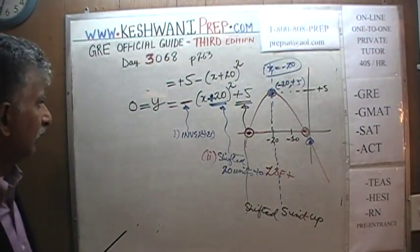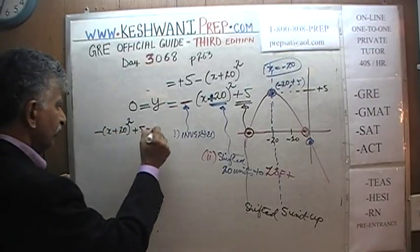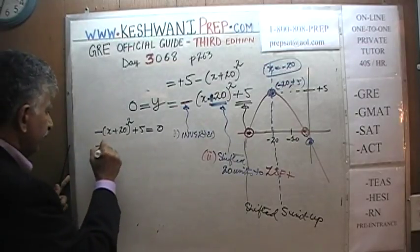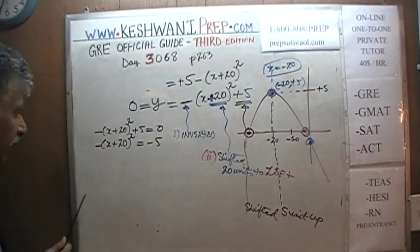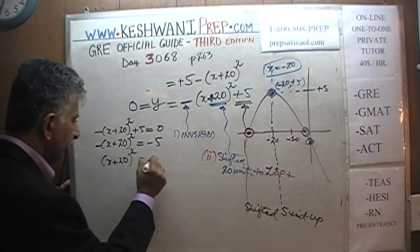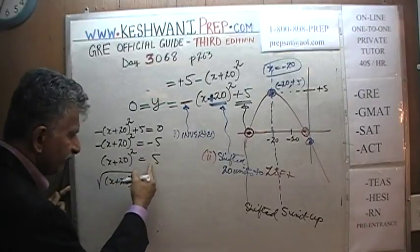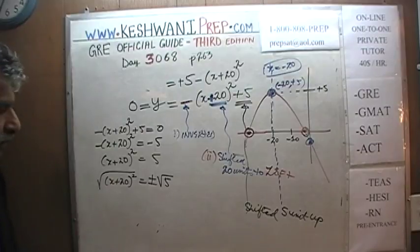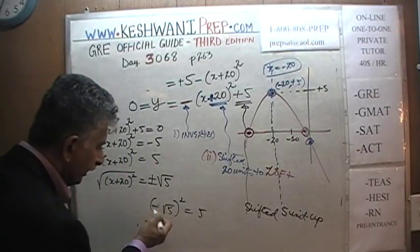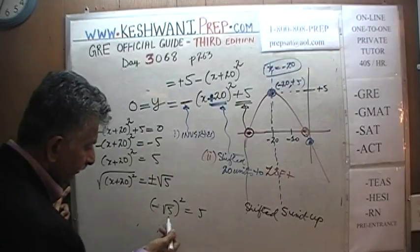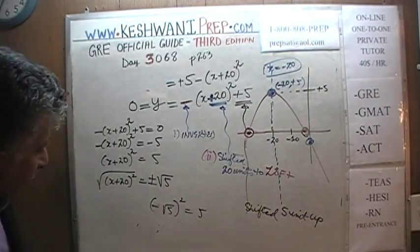We're trying to find the x-intercepts, so we set y = 0. We get: −(x+20)² + 5 = 0. Bringing 5 to the other side: −(x+20)² = −5. Multiplying by −1: (x+20)² = 5. Taking the square root of both sides gives two answers: positive and negative root 5. The parabola cuts the x-axis at two points.